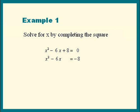Plus 8 moved to the other side is negative 8. Now let's complete the square. 6 divided by 2 is 3. 3 squared is 9. We have to add 9 to the other side also.